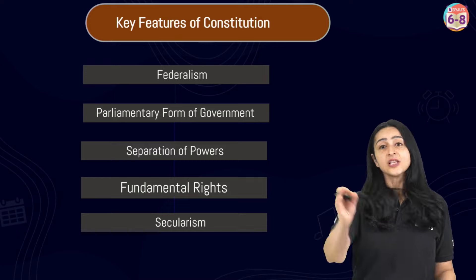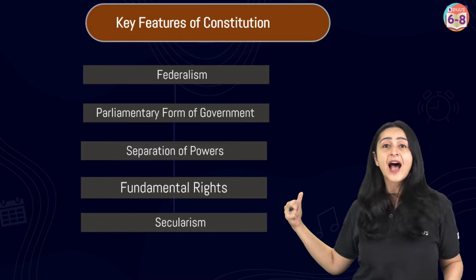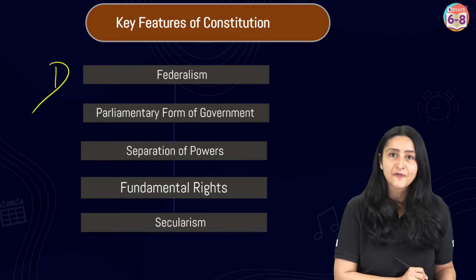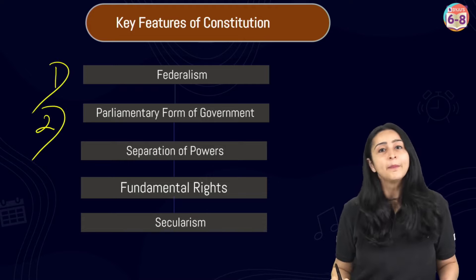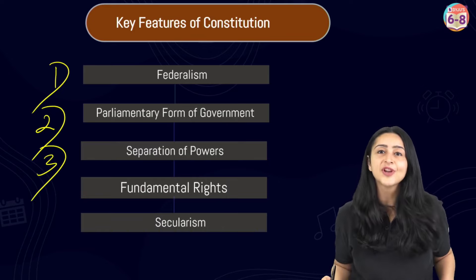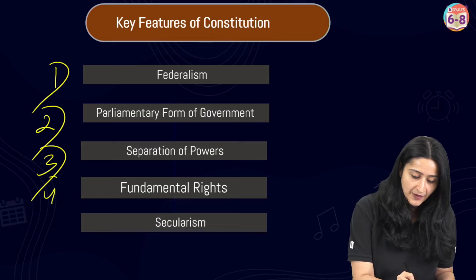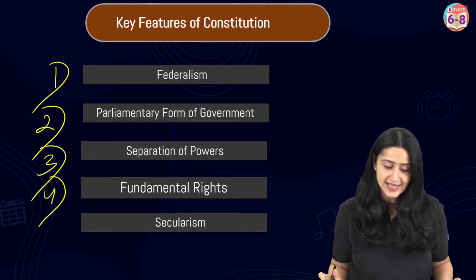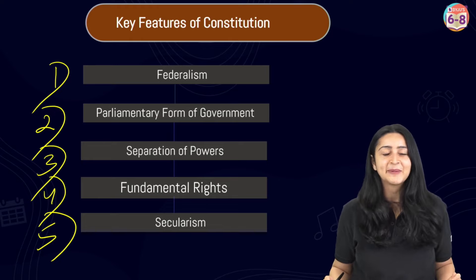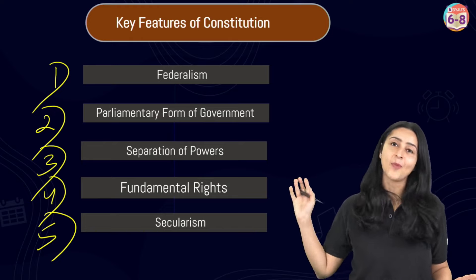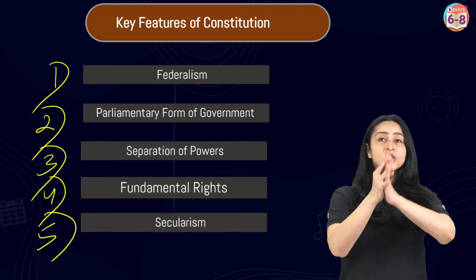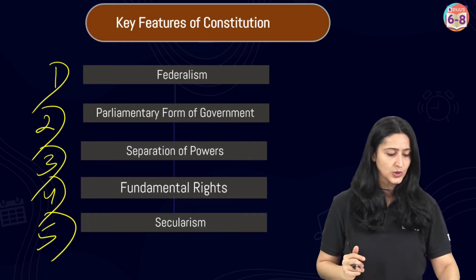Now let us go ahead and understand the key features of our constitution. The Constitution of India has five main features: number one, federalism; number two, parliamentary form of government; number three, separation of powers; number four, fundamental rights; and number five, secularism. We will be going through all of these in more detail.